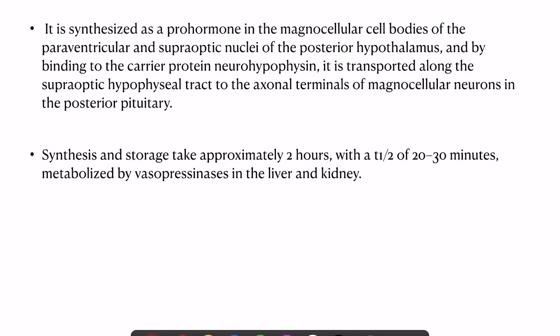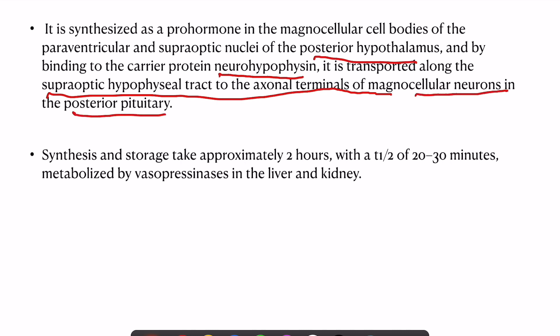Vasopressin is synthesized as a prohormone in the magnocellular cell bodies of the paraventricular and supraoptic nuclei of the posterior hypothalamus. Binding to a carrier protein — neurophysin — it is transported along the supraoptic hypophysial tract to the axonal terminals of magnocellular neurons in the posterior pituitary. Synthesis and storage takes approximately two hours; the half-life is around 20–30 minutes, and vasopressin is metabolized in the liver and kidney.